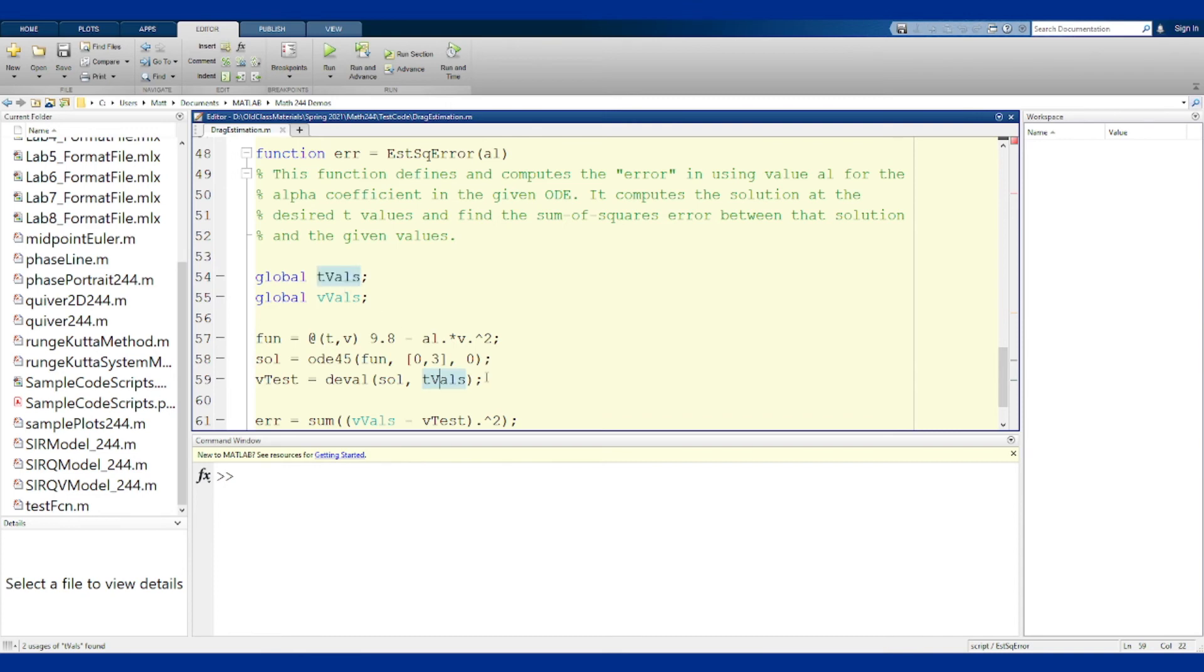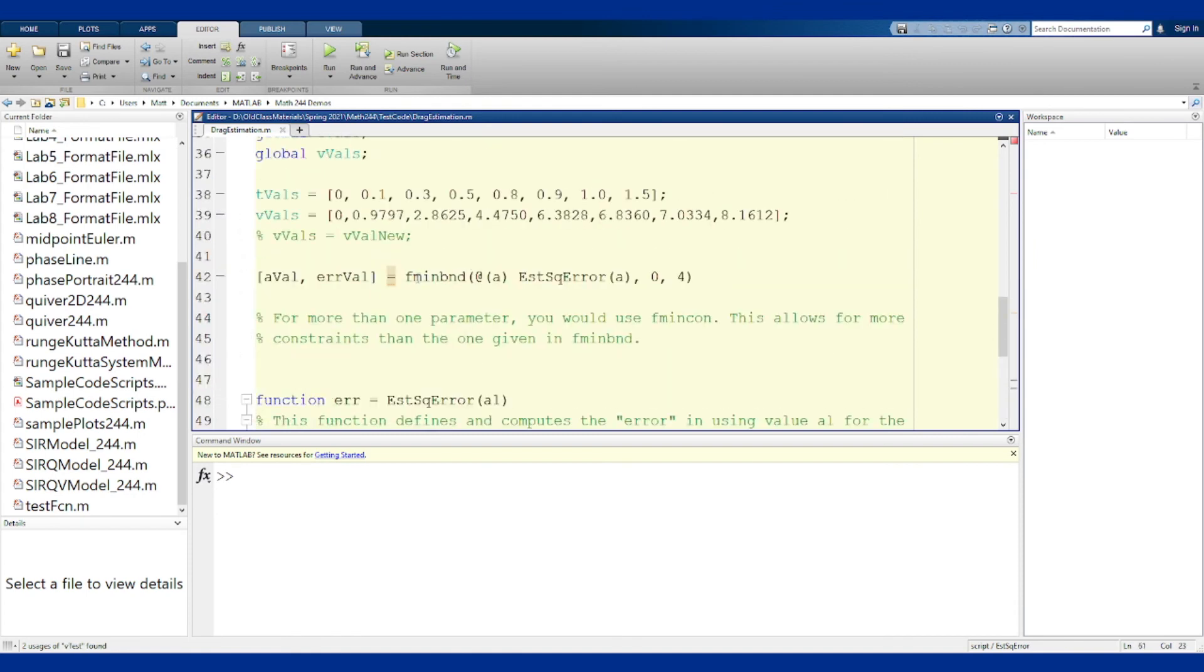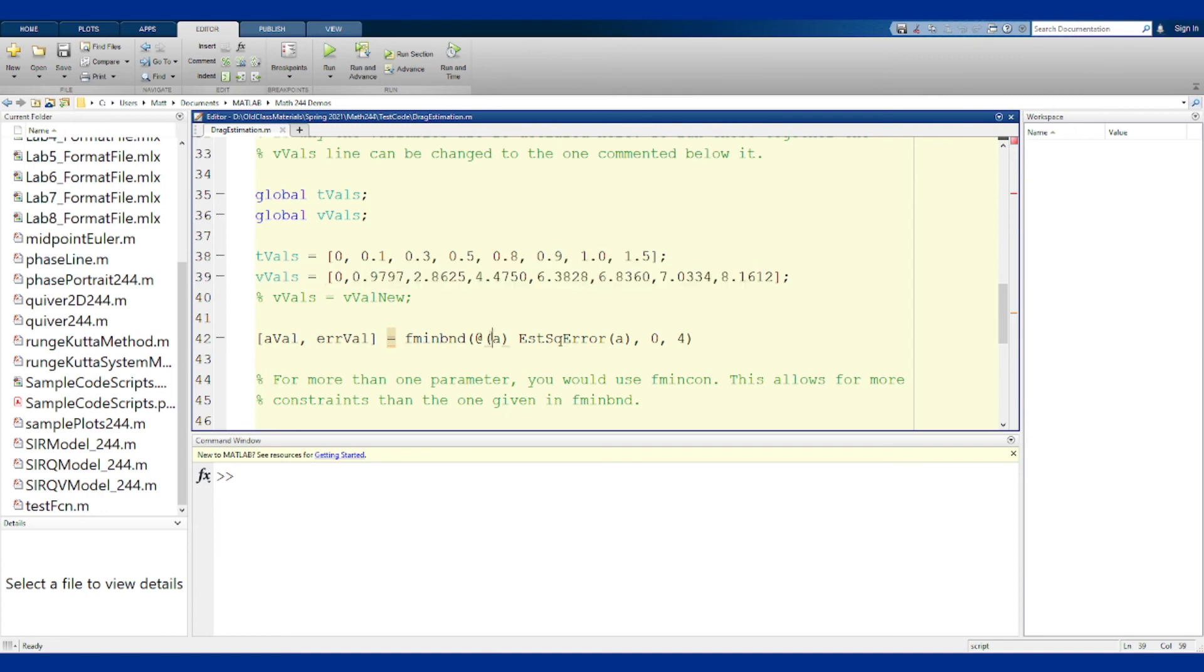We solve the differential equation numerically using ODE45 and evaluate it at the t values we give it. The error is the sum of squares between our test v values and the values we're given. The code takes in the t and v values and runs it to give the value of a that minimizes this problem - minimizing the error function over all possible values of a between 0 and 4.